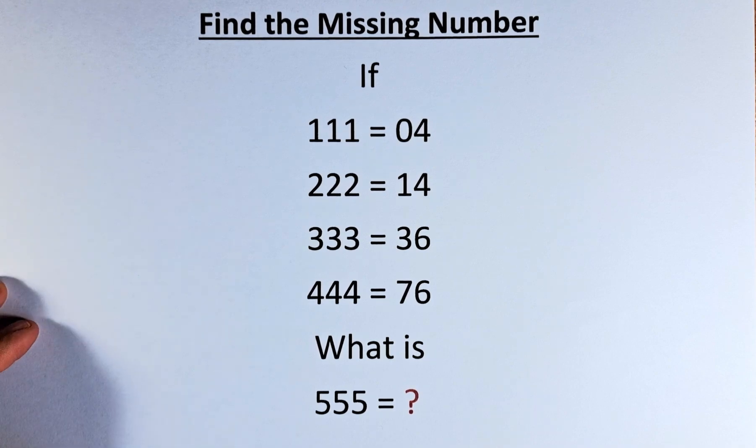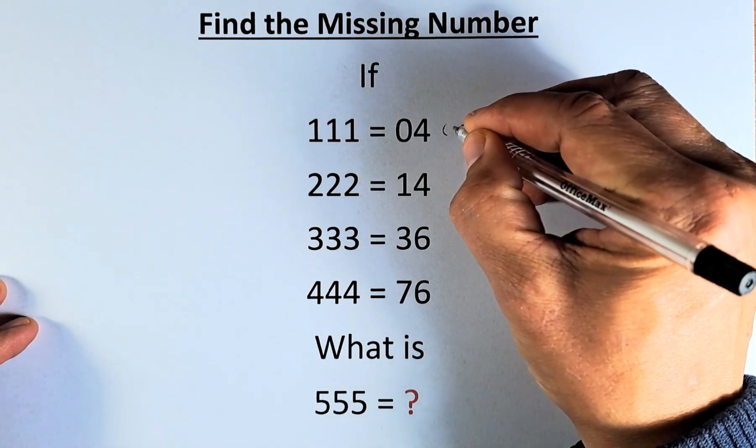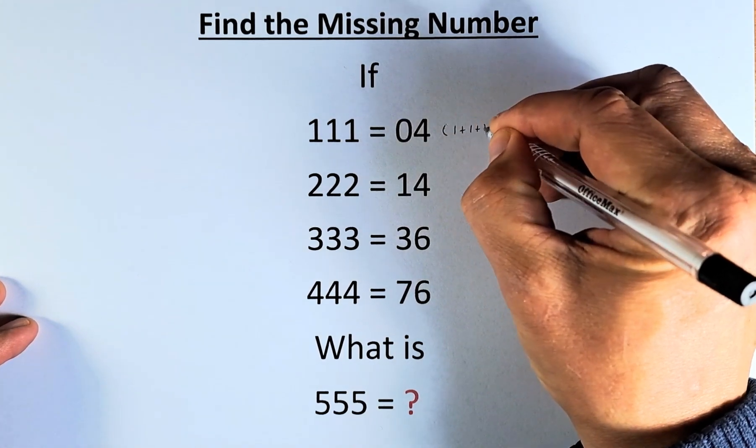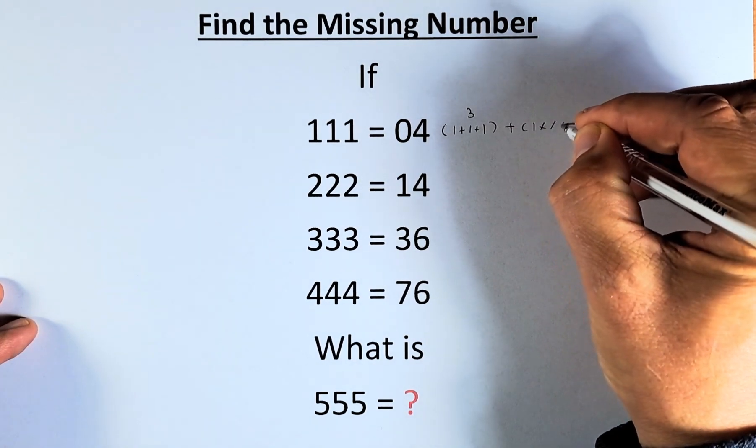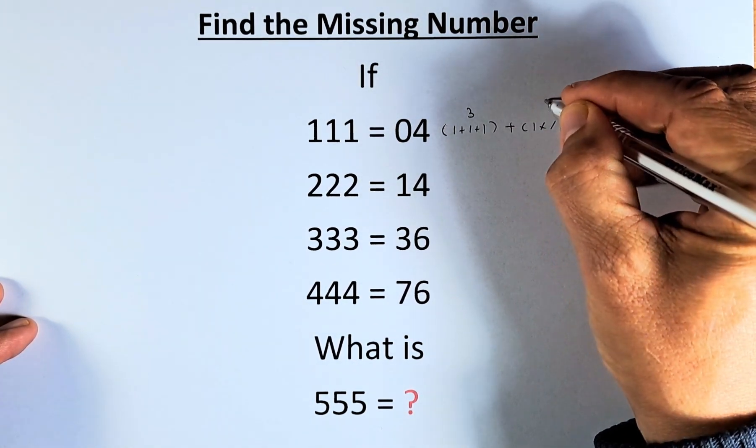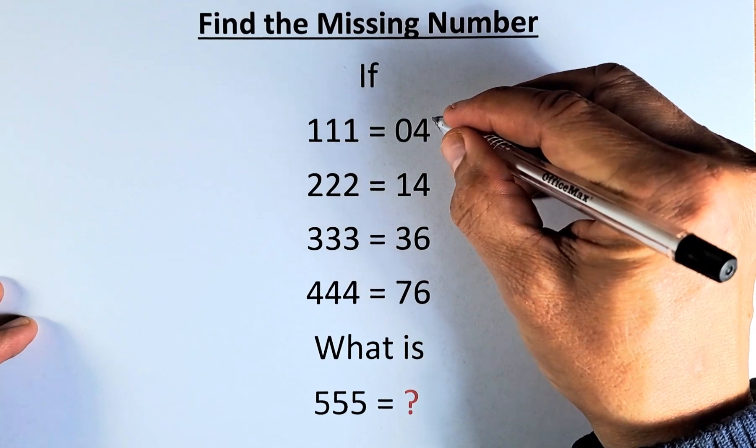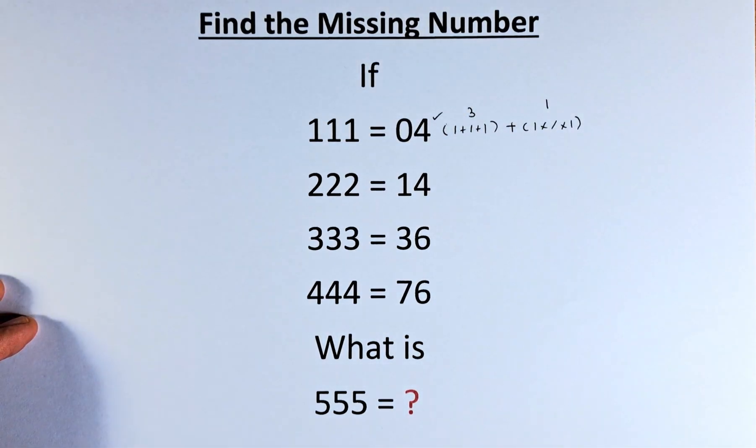If 111 equals 4, it's the same as 1+1+1, which equals 3, plus 1×1×1, which is 1. So 3+1, and the answer is 4.